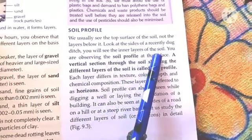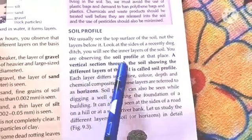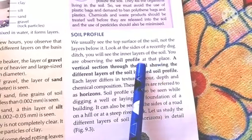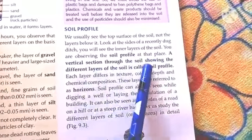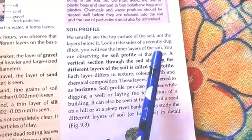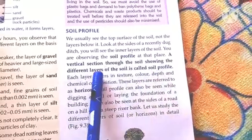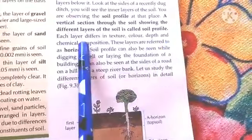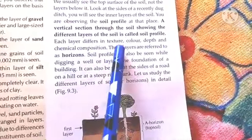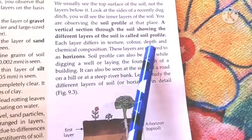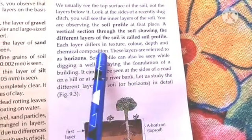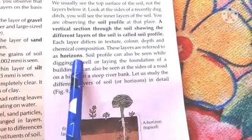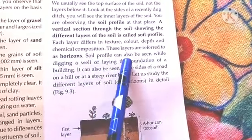If you observe the soil profile at a place, a vertical section through the soil showing the different layers of the soil is called a soil profile. In a soil profile, the vertical section differs in texture, color, depth, and chemical composition.